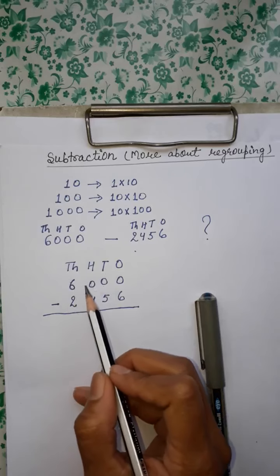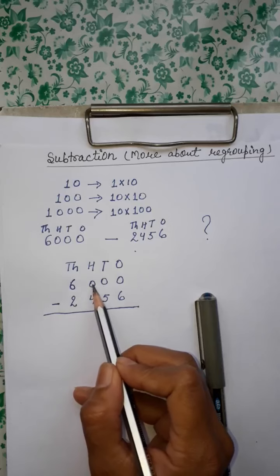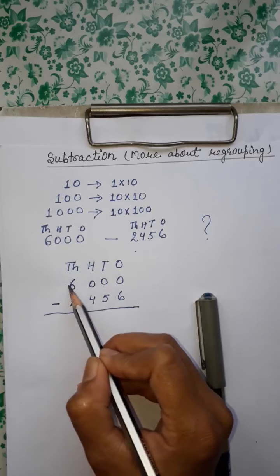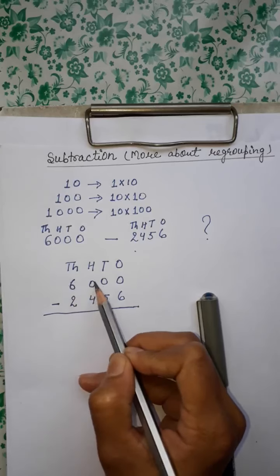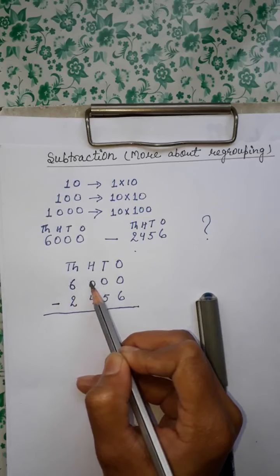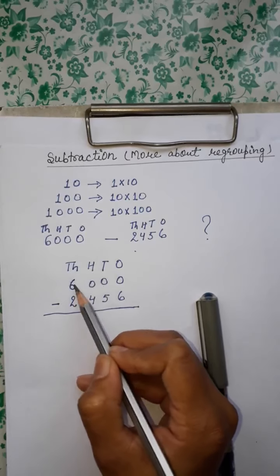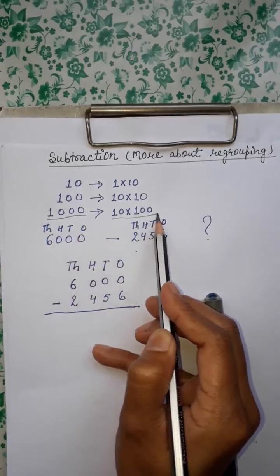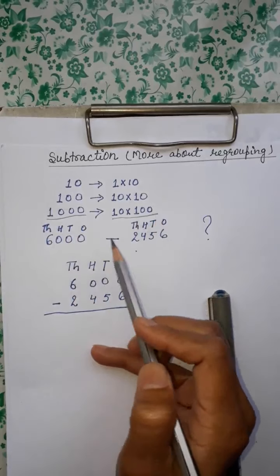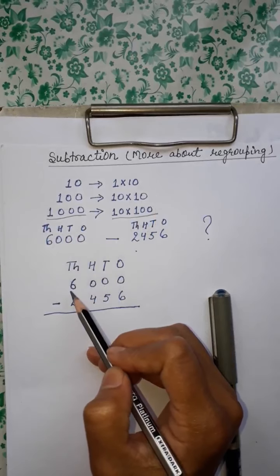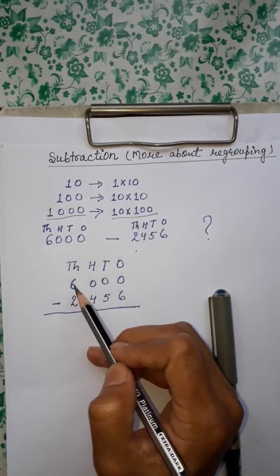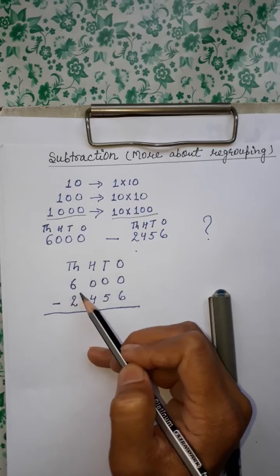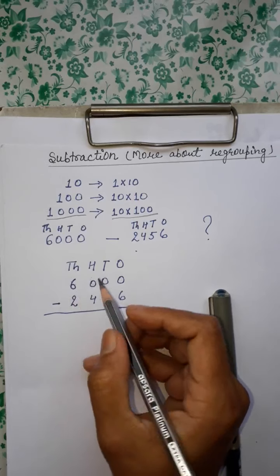Toh Step 1 mein kya karenge hum? Borrow 1000 and change it into 10 hundreds. 1000 se hum jab bhi lenge toh wo hamein 1000 hi dega — toh hum kya karenge? 1000 ko 100 mein change karenge. Theek? Toh hum kya karenge? 1000 borrow karenge inse — toh wo ho jaega hamara 10 hundreds.